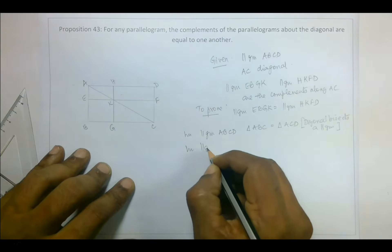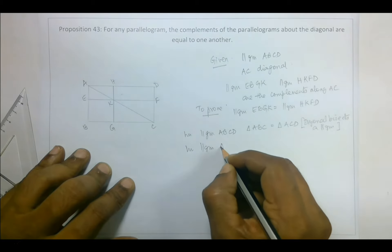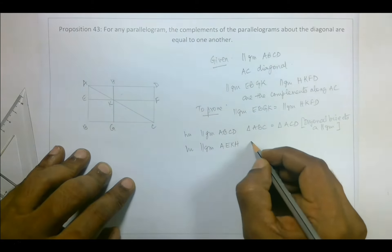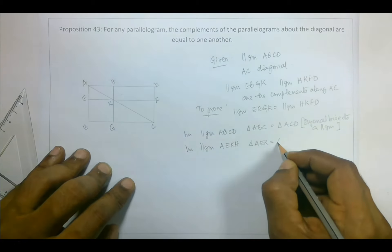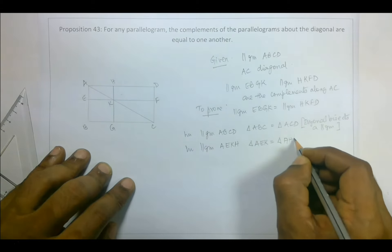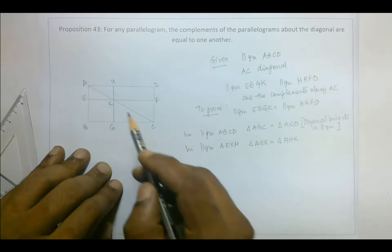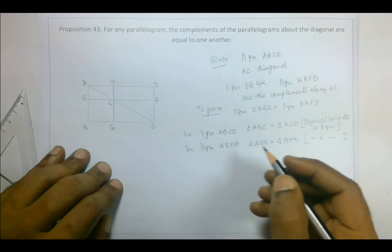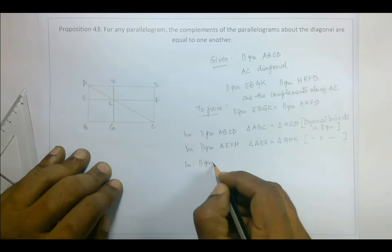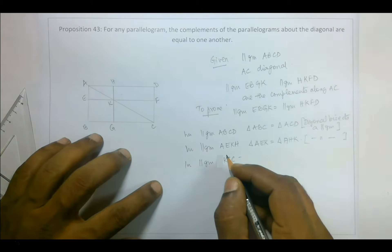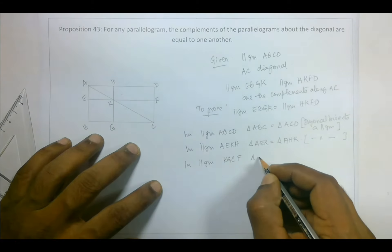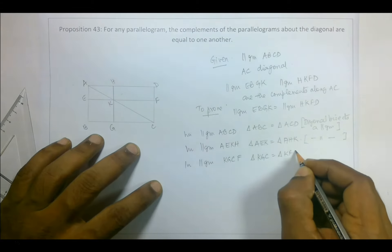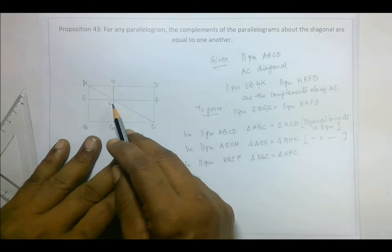Now in parallelogram EKHA, triangle AEK is equal to triangle HKA — same reason, the diagonal bisects the parallelogram. And in parallelogram KGCF, triangle KGC is equal to triangle KFC — again, the diagonal bisects the parallelogram.